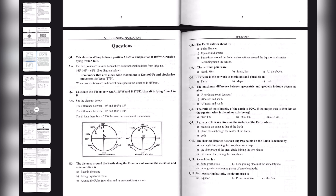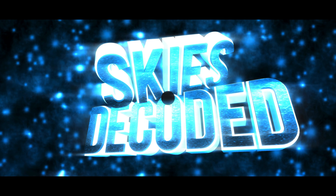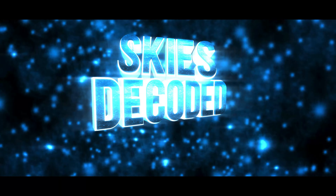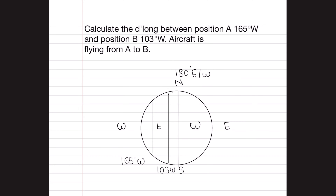Hello guys and welcome to my channel Skies Decoded. In this video we'll solve the back questions of RK Bali's Chapter: The Earth. Let's get started. We know how to find the difference between two latitudes and two longitudes, so we can further proceed with the question solving. Calculate the D-Long between position A which is 165 degrees West and position B which is 103 degrees West. The aircraft is flying from A to B.